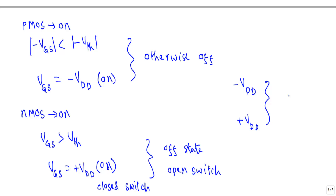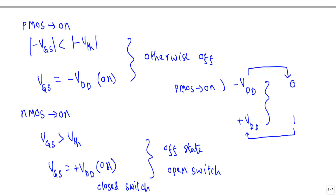In CMOS logic circuits we have two voltage levels: minus VDD and plus VDD. To specify logic 0 in a CMOS NAND gate we apply minus VDD, and to specify logic 1 we apply plus VDD. When we apply minus VDD, the p-MOS will be in ON state, otherwise p-MOS will be in OFF state. When we apply logic 1 or plus VDD, the n-MOS will be in ON state; otherwise the n-type MOSFET will be in OFF state.